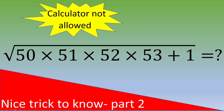Hello and welcome. In this video, for this exercise, we want to calculate the value of square root of 50 times 51 times 52 times 53 plus 1. Obviously, a calculator is not allowed, and to do that we are going to use the trick we saw in a previous video. So let's begin.